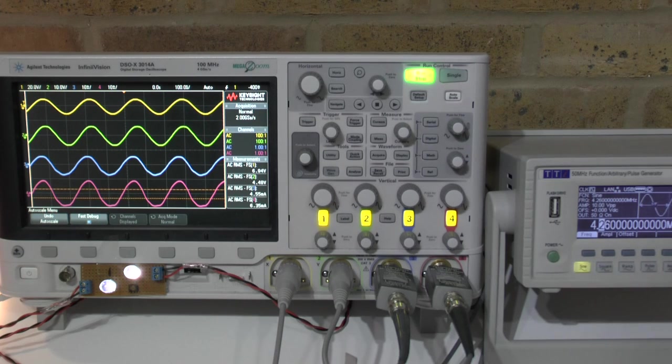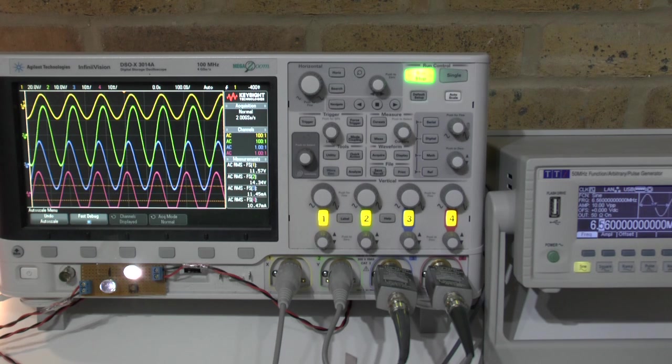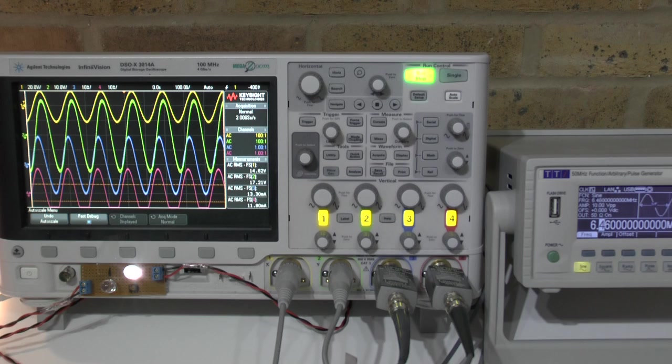If I go further up now to the resonance frequency we had before measured. Let's do that. Then we see things change. So at 6.46 it is close to the resonance frequency. I see only the source illuminated. That was the resonance frequency I measured before.